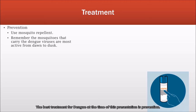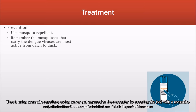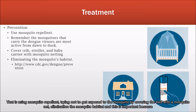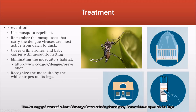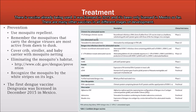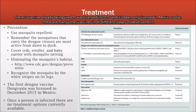The best treatment for dengue at the time of this presentation is prevention — that is, using mosquito repellent, trying not to get exposed to the mosquito by covering the bed with a mosquito net, and eliminating the mosquito habitat. This is especially important because the Aedes aegypti mosquito usually doesn't fly more than 400 meters throughout its entire life. The mosquito also has a very characteristic phenotype: white stripes on its legs. There is a vaccine already being used, licensed in 2015, though so far only licensed in Mexico, with many other vaccines in various stages of development.